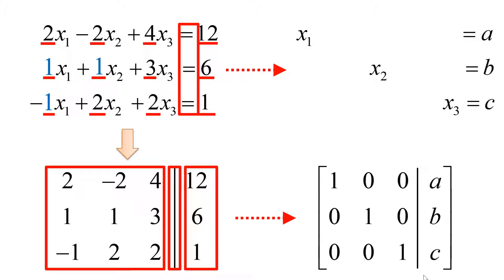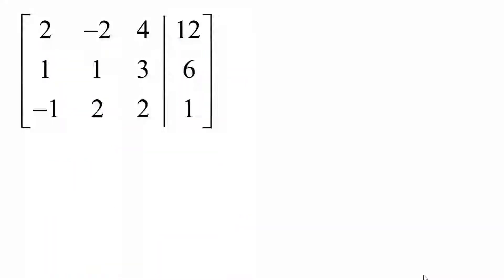Next, we reduce the augmented matrix to reduced row echelon form using Gauss-Jordan elimination. The reduced row echelon form is an identity matrix on the left side and certain numbers on the right — here we use A, B, C as an example. The reduced row echelon form is equivalent to the simple equations above, so your solutions are x1 equals A, x2 equals B, and x3 equals C. Again, my ultimate goal is to reduce the augmented matrix to reduced row echelon form.